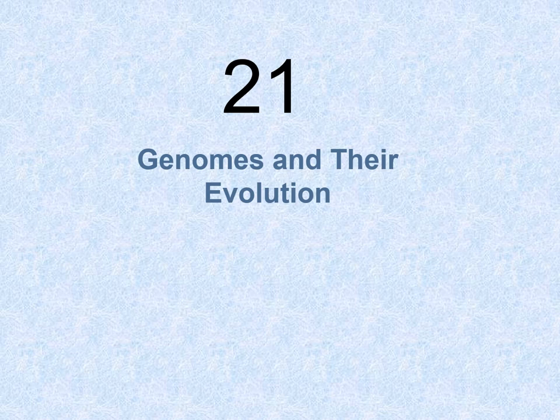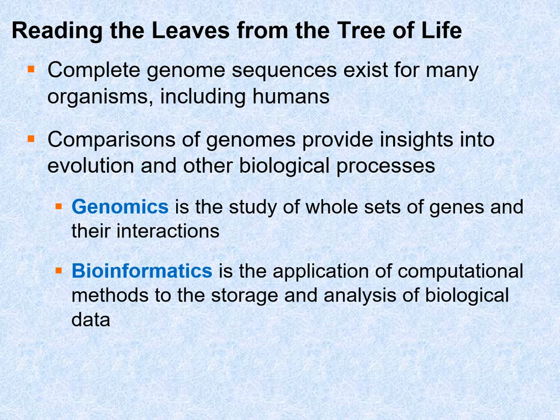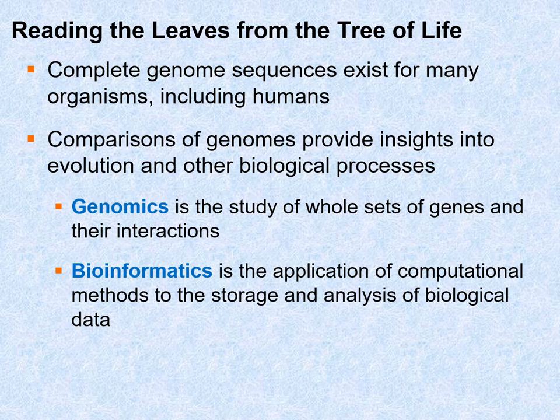Hello, we are going to be talking about genomes and how they evolve. The evolution of organisms really starts with changes that occur in the genome. The title of this slide says 'reading the leaves from the tree of life.' So how do we read the leaves? We read them by reading the genome sequence. The genome sequence has been determined for many organisms, and most are available on the World Wide Web. Comparisons of these genomes allow us to determine the evolutionary relatedness of organisms and learn about other biological processes.